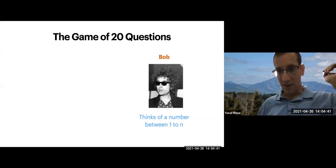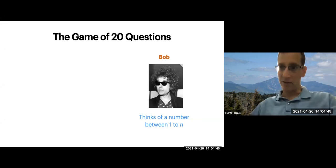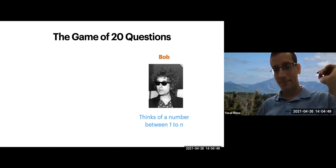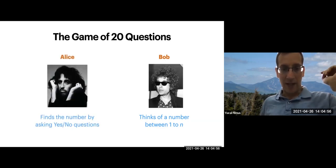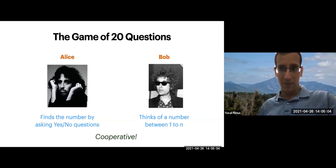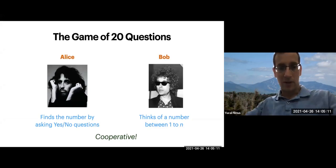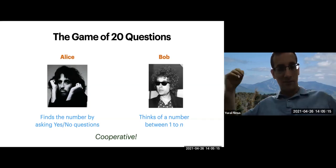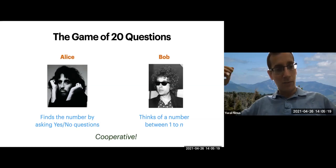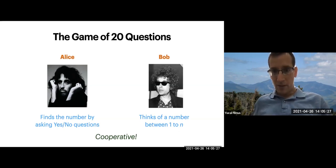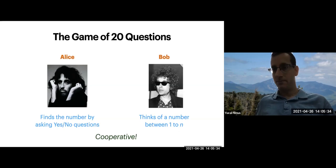Concretely, we will think of this object as a number from one to n. So Bob thinks of a number between one and n. Then Alice's goal is to find the number by asking yes/no questions. In the vanilla game of 20 questions, it's a completely cooperative game. You can think of it as a communication scenario where Alice and Bob's joint goal is for Bob to transfer some number from one to n to Alice. The only protocol is by asking yes/no questions. What is the optimal worst-case number of questions Alice needs to ask to discover the unknown number?